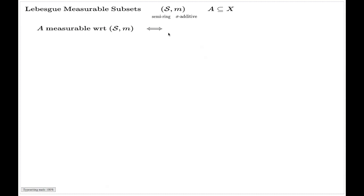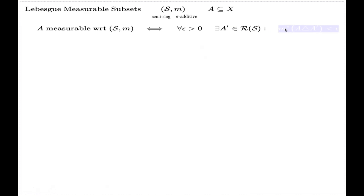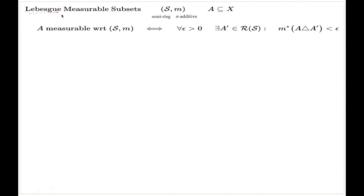If and only if — listen to the definition now — for every positive epsilon there is an element A' from the minimal enveloping ring, such that the external measure of this symmetric difference A triangle A' is less than epsilon. If for every epsilon you can produce such an A', this set A is called measurable with respect to couple S, M, or sometimes people say Lebesgue measurable with respect to this couple.